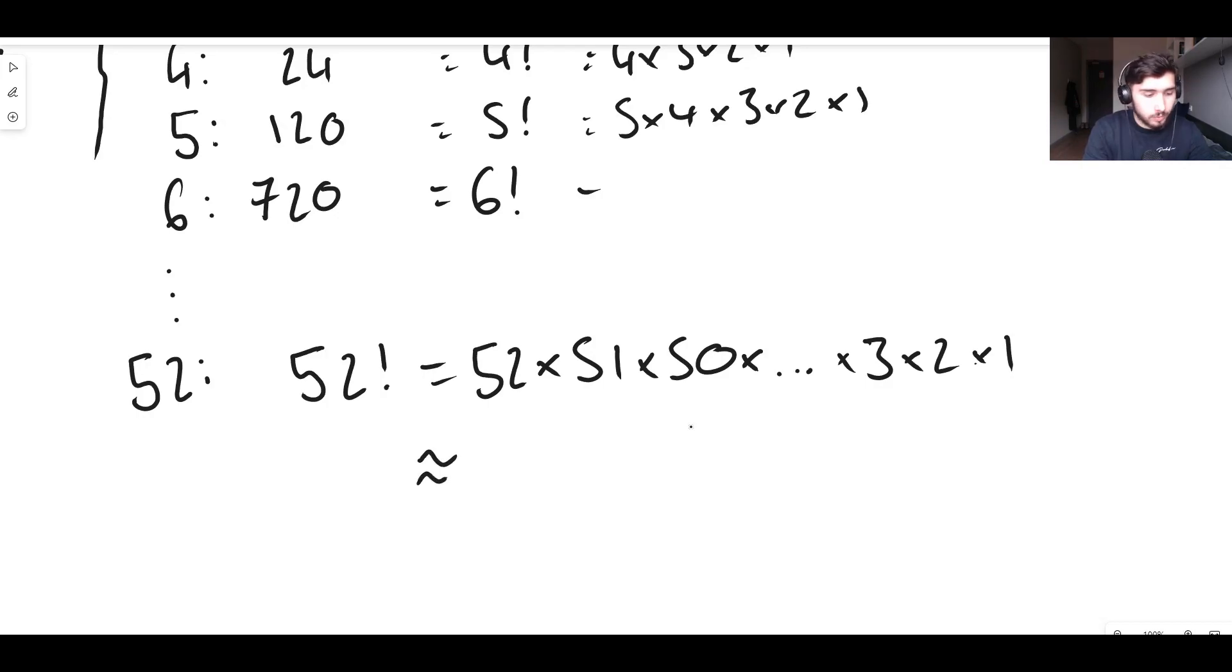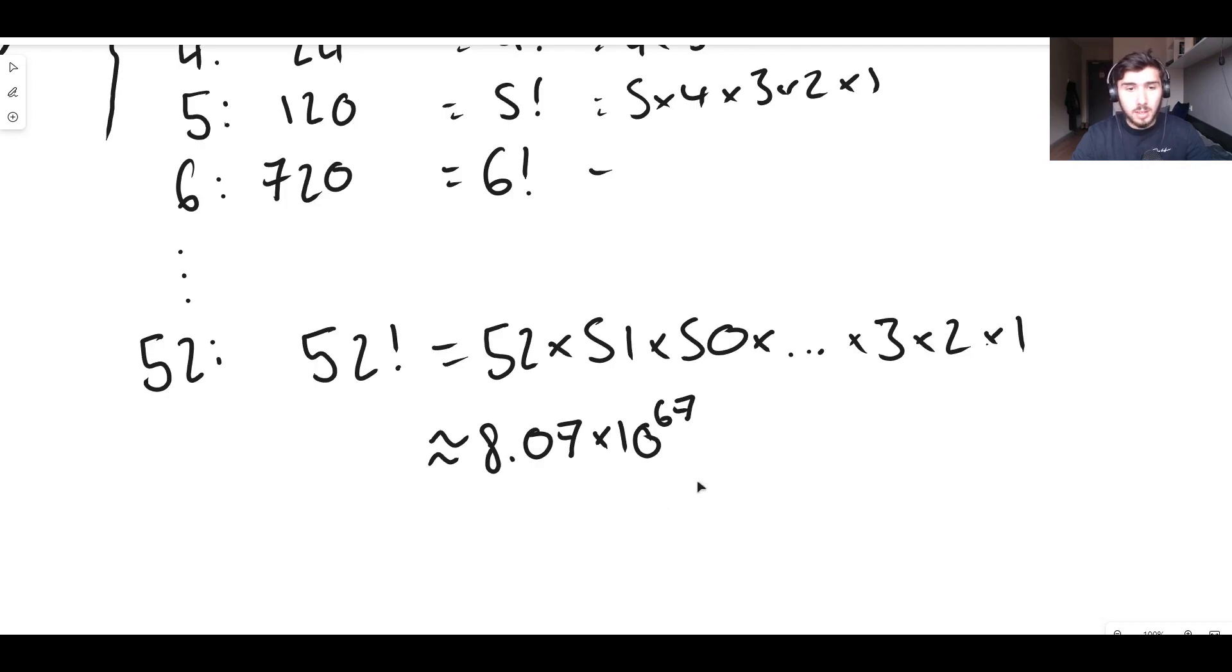I'll tell you exactly what it is or approximately what it is at least. It's roughly equal to 8.07 times 10 to the power of 67. Which again is basically 10 to the power of 67 is 10 times itself 66 times and then times that by the 8.07. Absolutely ridiculously big number.